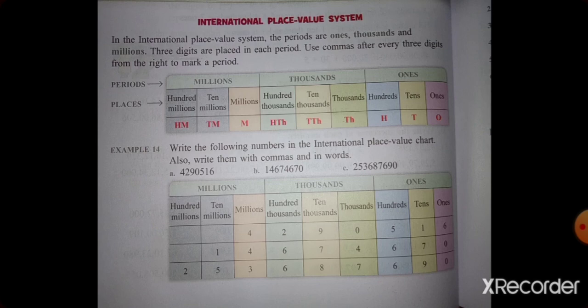The first number is 4,290,516. So: 6 is in the Ones digit, 1 is in the Tens digit, 5 is in the Hundreds digit. The next period is Thousands: 0 in the Thousands digit, 9 in the Ten-Thousands digit, 2 in the Hundred-Thousands digit. The next period is Millions: 4 is in the Millions place. Like this, you should write in the place value system.